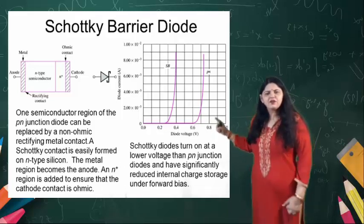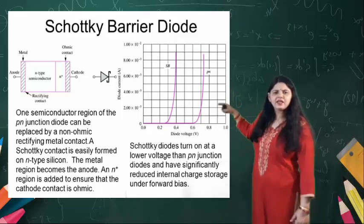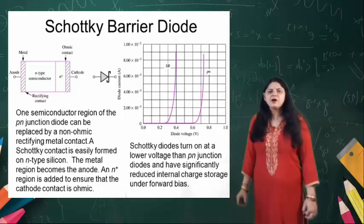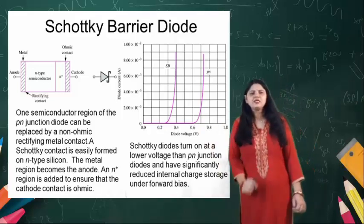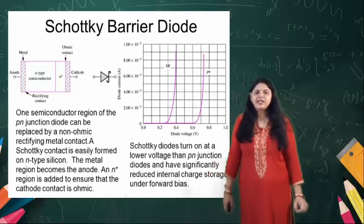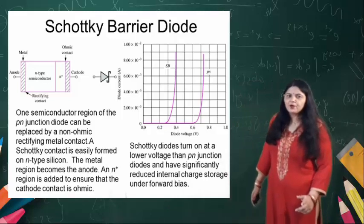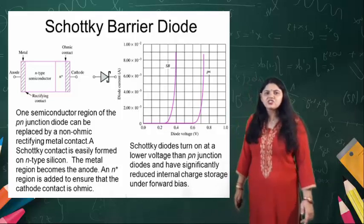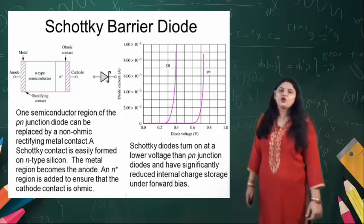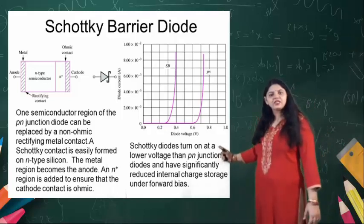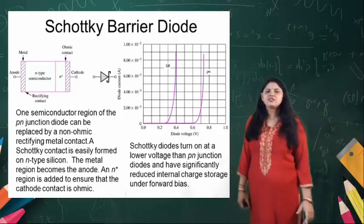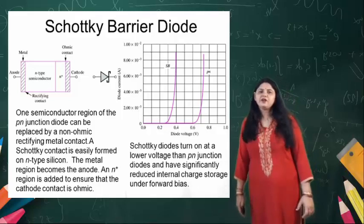Whenever a lower voltage is applied, the characteristics show the current movement. The one semiconductor region of the PN junction diode can be replaced by a non-ohmic rectifying contact — a Schottky contact — that is easily formed by using an N-type silicon. The metal region becomes the anode and the N-plus region is added to ensure that the cathode contact is ohmic, and the silicon diode turns on at a lower voltage than the PN junction diode. The internal charge storage is also reduced under forward bias.